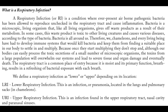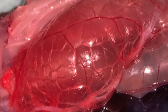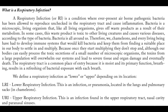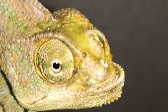There are, based on location, two types of respiratory infection. The so-called LRI — lower respiratory infection — is an infection or pneumonia located in the lungs and in pulmonary sacs in chameleons. The URI, the upper respiratory infection, is the second type, which is an infection found in the upper respiratory tract, nasal cavity, and paranasal sinuses.